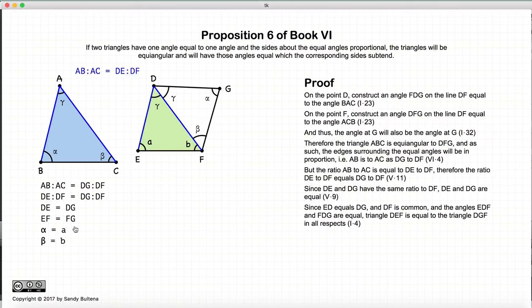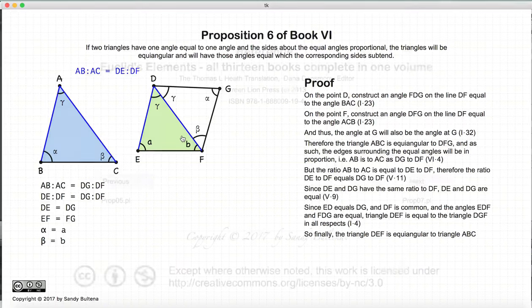Well, if A is equal to alpha and beta is equal to B, that means that the original two triangles ABC and DEF are equal angular. And that's it for this proof.